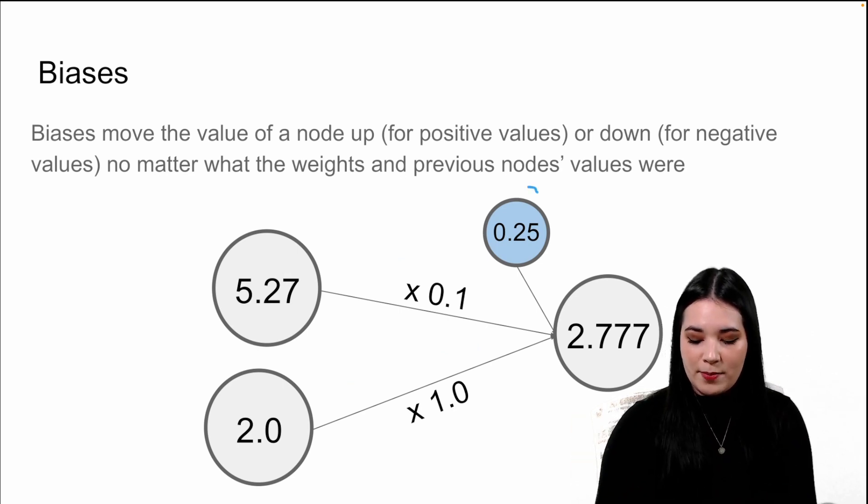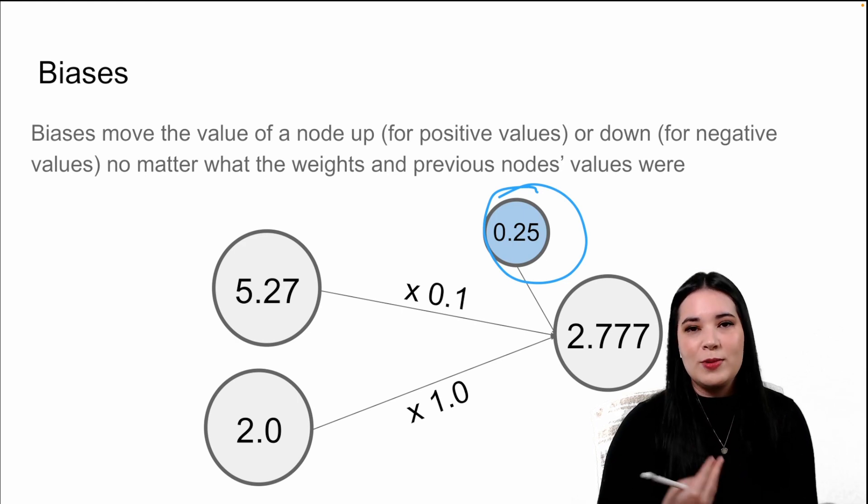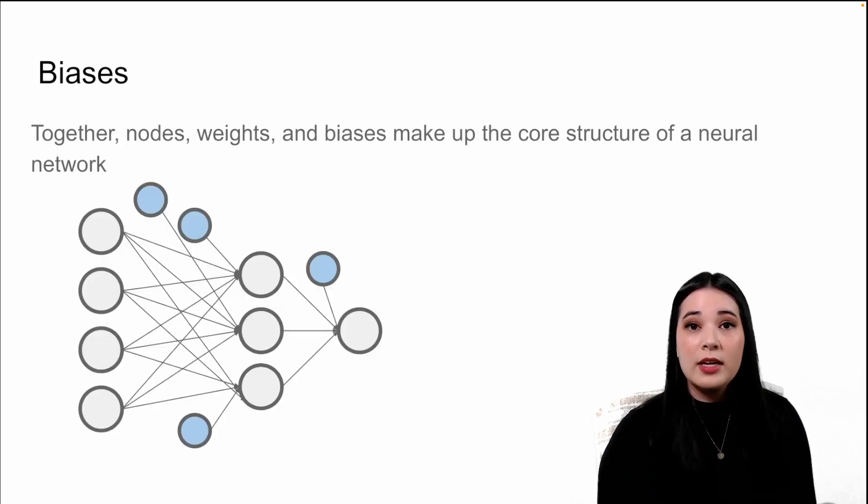In addition to the previous nodes times their weights, we also add something called a bias to our node. Biases move the value of a node either up or down, no matter what the weights and input values were from the previous nodes. You can think of this term as similar to an intercept in a linear regression.